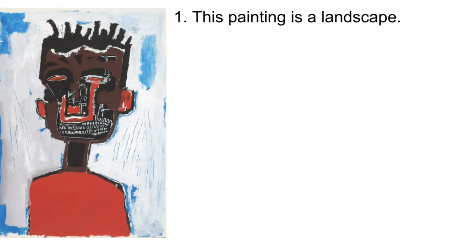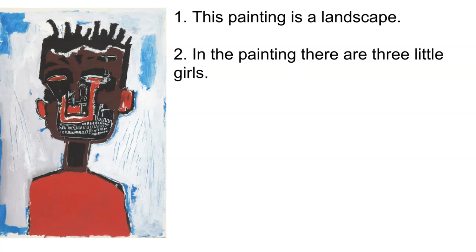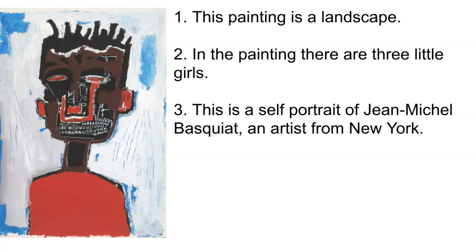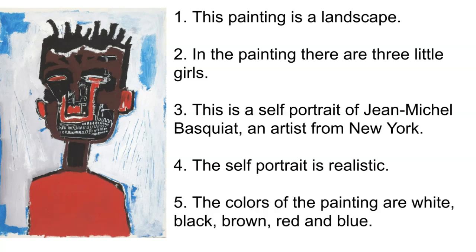This painting is a landscape. In the painting, there are three little girls. This is a self-portrait of Jean-Michel Basquiat, an artist from New York. The self-portrait is realistic. The colors of the painting are white, black, brown, red, and blue. Once you have played the marker game, you can have your students write their own true-false statements in pairs, as it is a good idea to have students do presentational writing over the course of the unit to practice their skills.